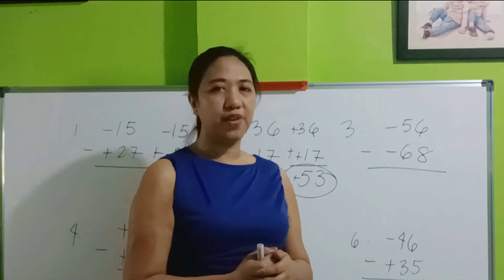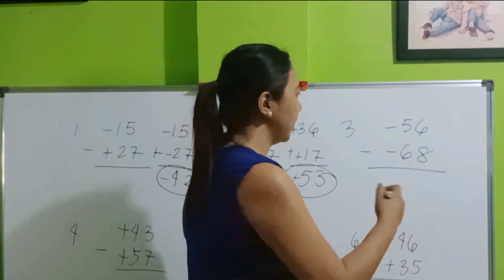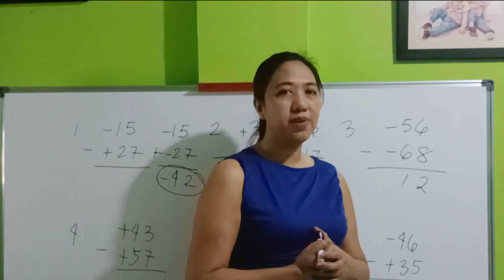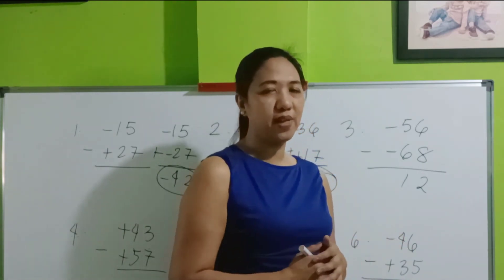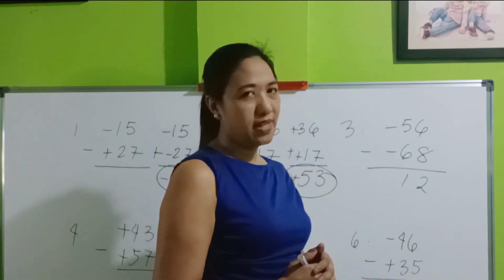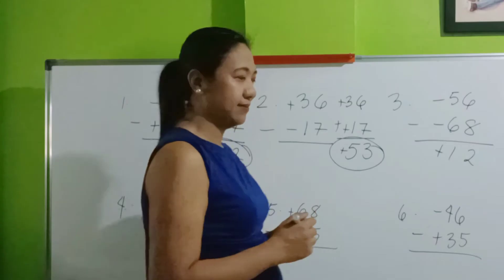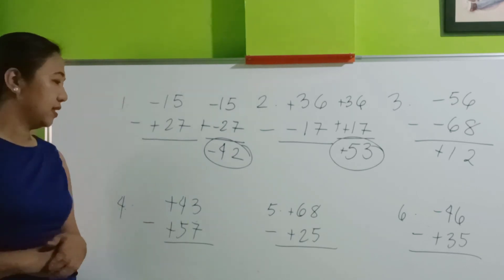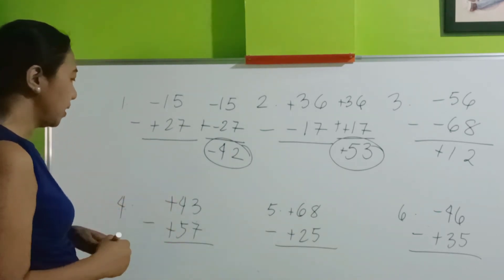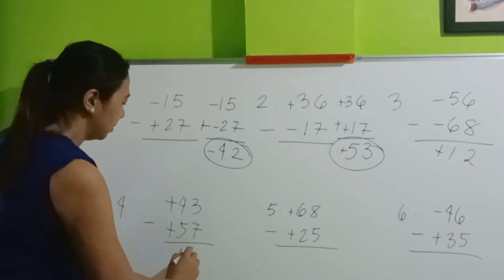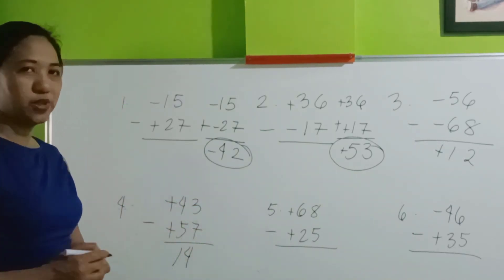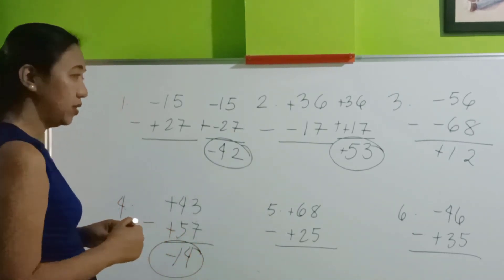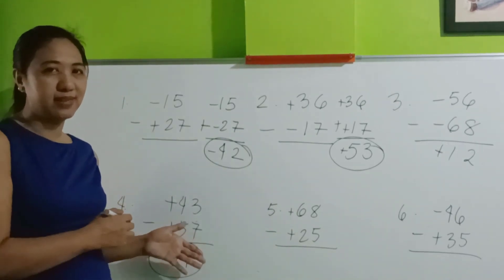Now let's go to number 3. Let's do the shortcut — just subtract. If the absolute value of the minuend is less than the absolute value of the subtrahend, the answer should be positive. These are both positive numbers. To subtract: the minuend is less than the subtrahend, so it should be negative. Do not be confused with the shortcut.